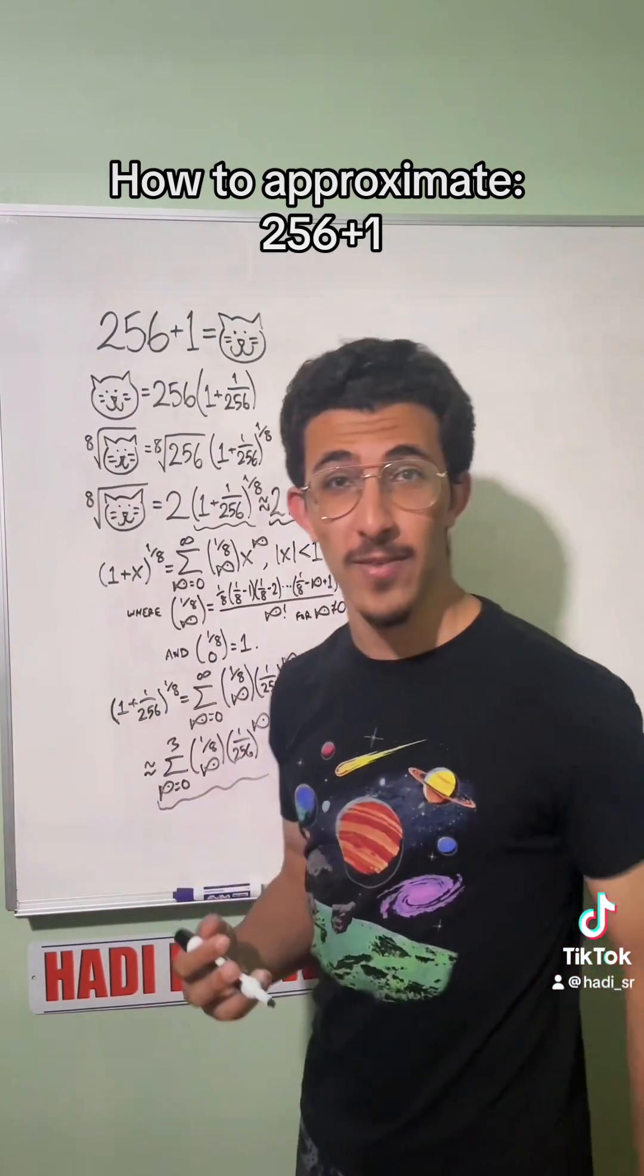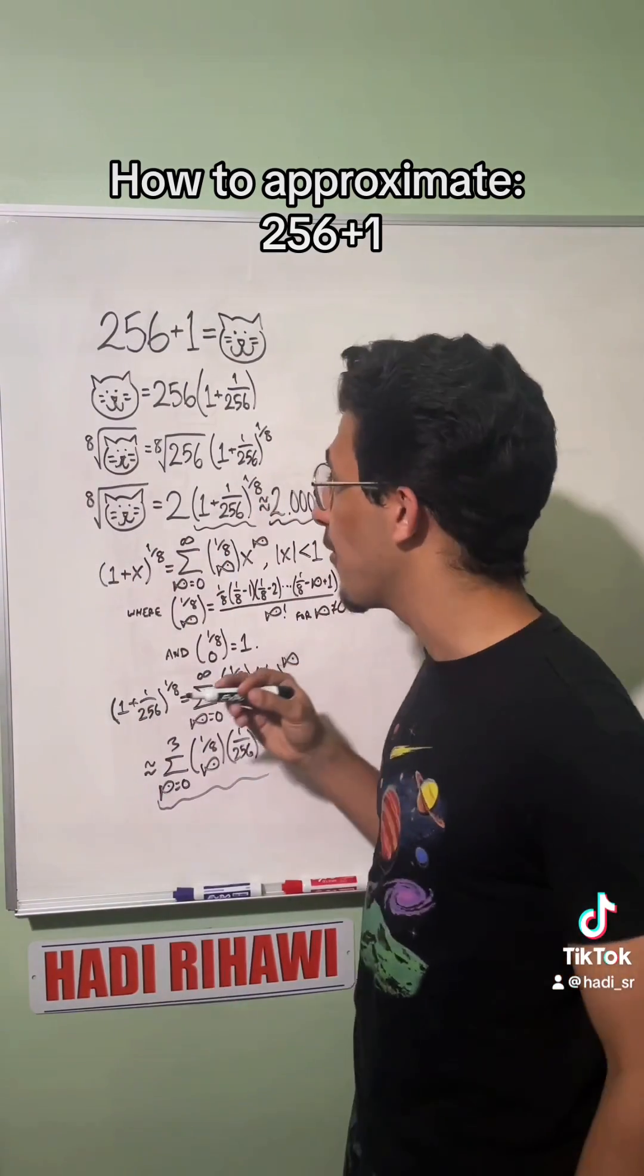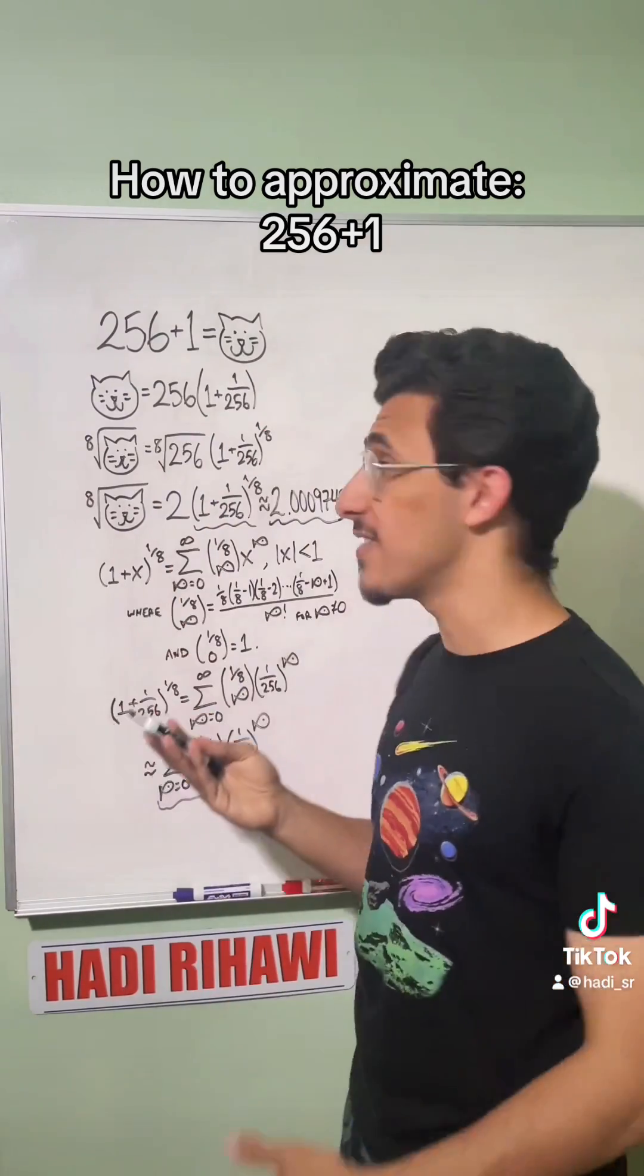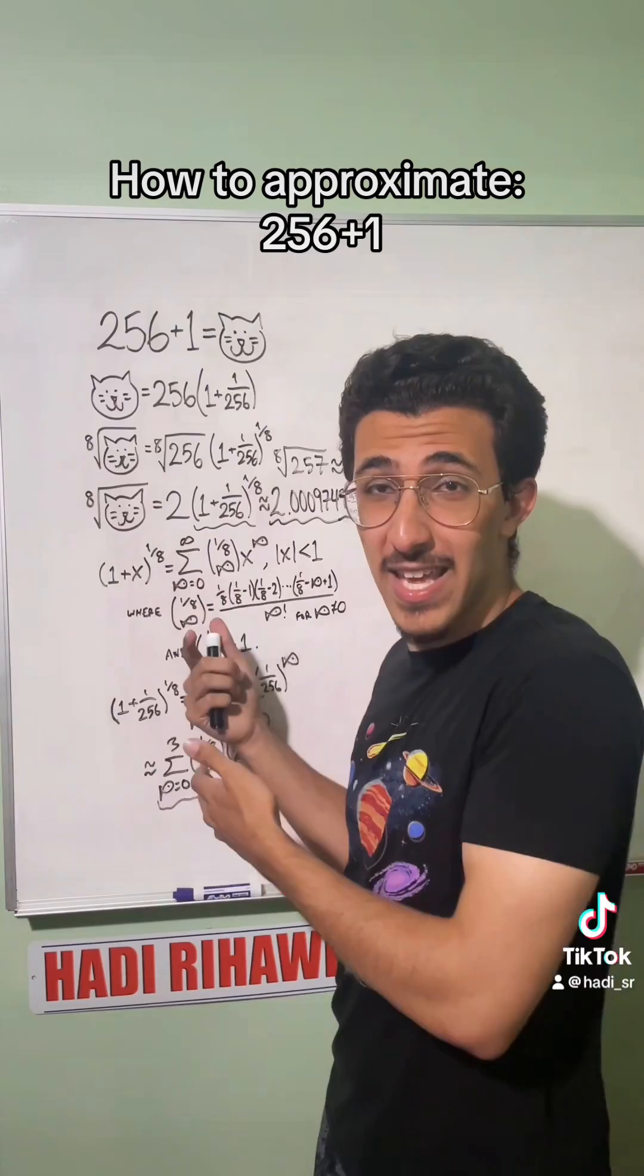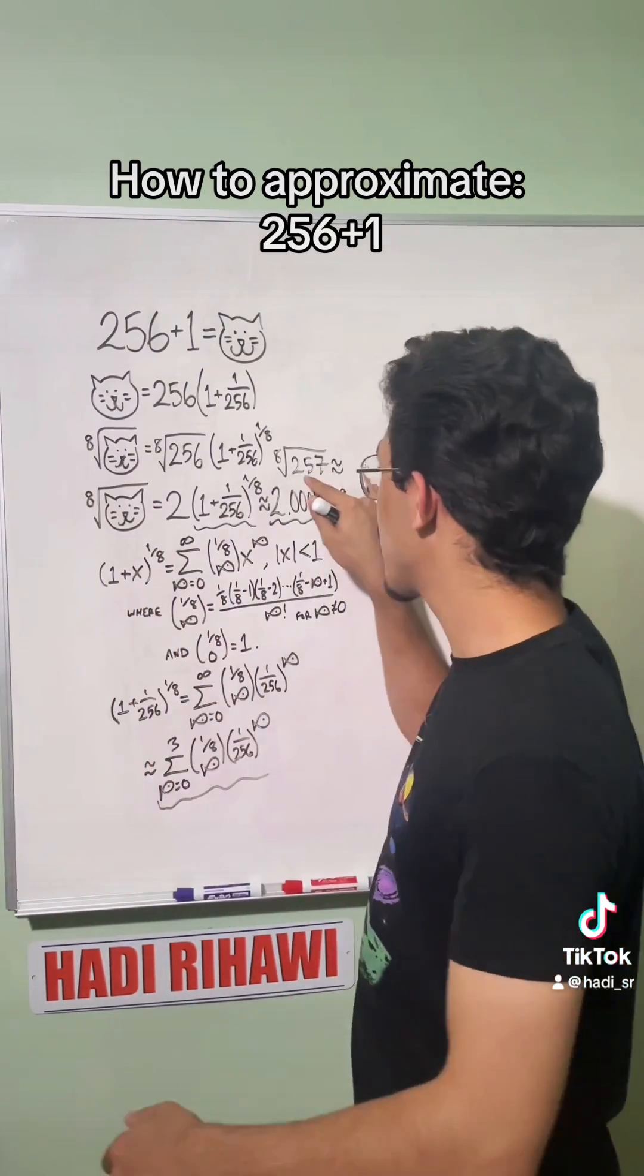I rounded this to 2.0009. Really, I mean that's the main result of the video: the eighth root of cat is 2.0009 just about. And we know cat is exactly 257, so this is an approximation for the eighth root of 257. The rest of the video is just taking the eighth root and raising to the eighth power, and that'll retrieve the 257.